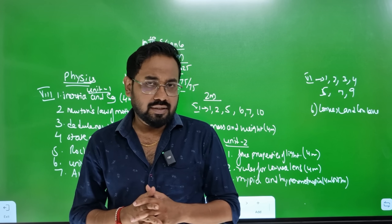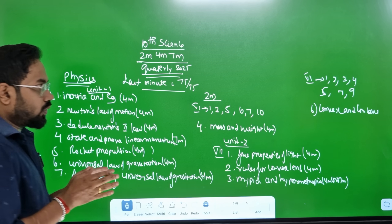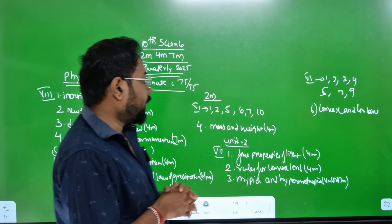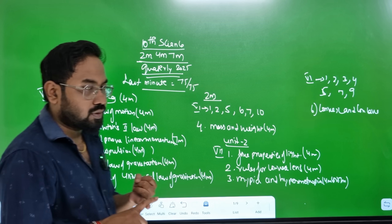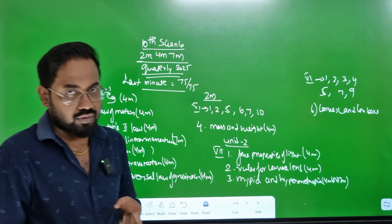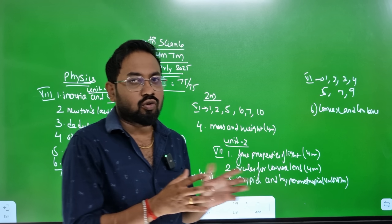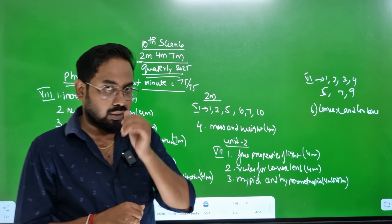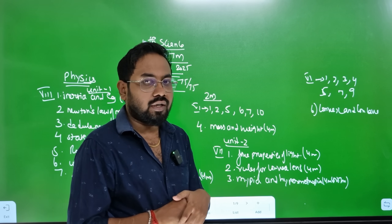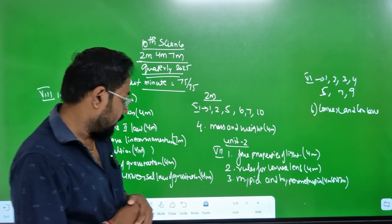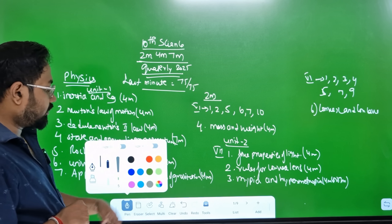Hi everyone. I am leaving for 10th century science for 1.5 days. How are you going to score 75-75? Problems, diagrams, hearts questions - what are you going to do for 7 marks, 4 marks, 2 marks? All of these are 75-75. I am telling you very clearly, I am going to mark it very carefully.